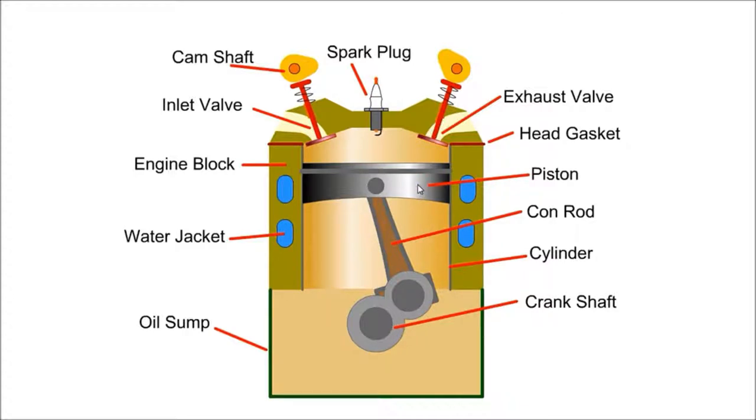while the con rod connects piston to the crankshaft, thus converting reciprocating motion of the piston to rotational movement of the crankshaft. At the top is the head gasket which provides a seal between the block and the cylinder head.